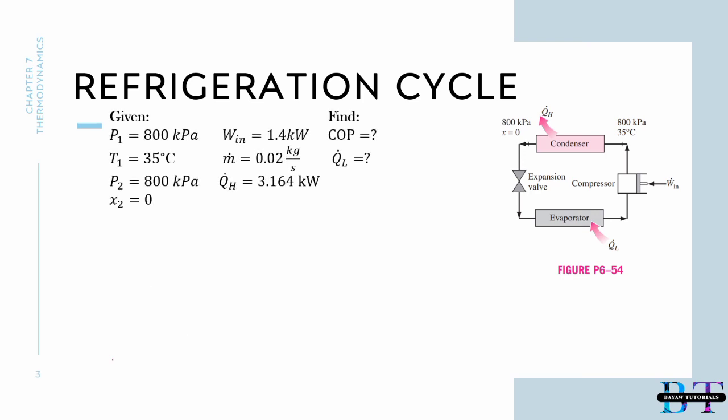First, lastly, let's go for our COP. That will be our Q sub H all over our work in. Inputting our values, we'll have 3.515 kilowatts all over 1.4 kilowatts and we'll have our COP at 2.51.